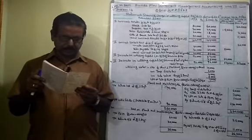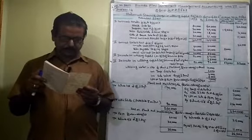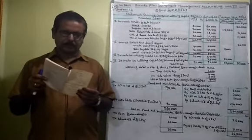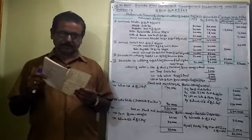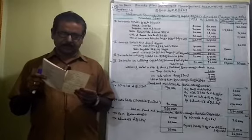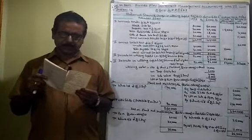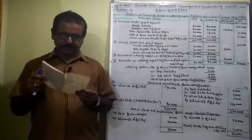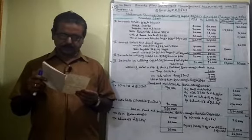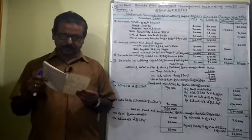Depreciation on plant and machinery at 20%. Goodwill 10,000 and 18,000. Land and buildings 67,000. Investments 20,000 and 40,000. Other figures: 39,000, 40,000, 58,000, 99,000, 12,000, 59,000.